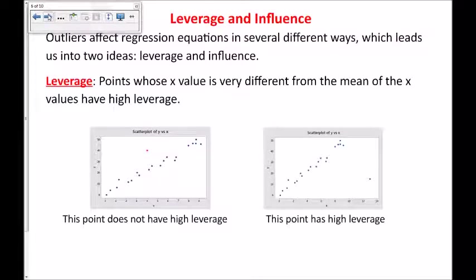The next idea is about leverage and influence. This is mostly useful for talking about outliers, but it can also be useful talking about any point in your scatter plot. Leverage points with high leverage are points whose x value is very different from the mean of the x values. So this point right here does not have high leverage because its x value is close to x bar the mean of the x's. On the other hand this point right here would have high leverage meaning it's far away from the mean x bar for the data.